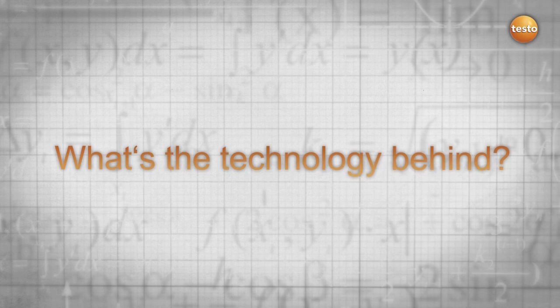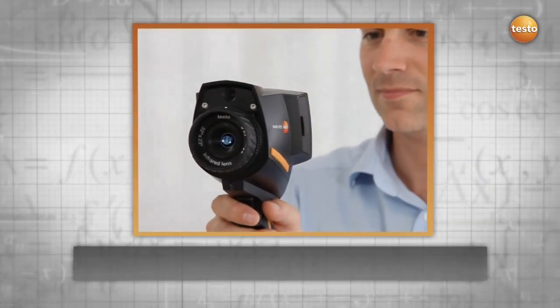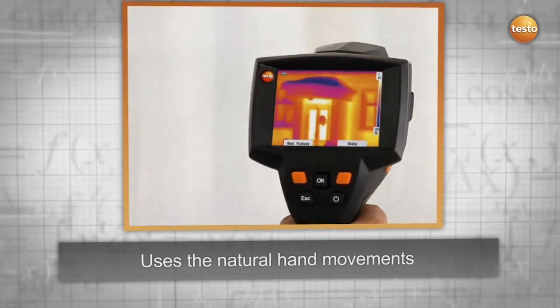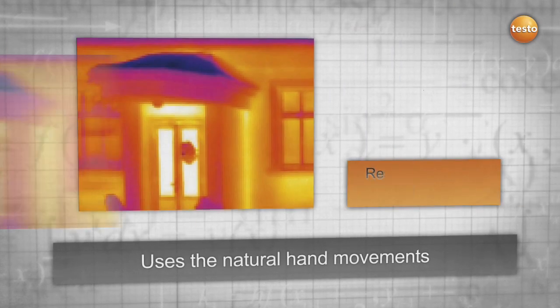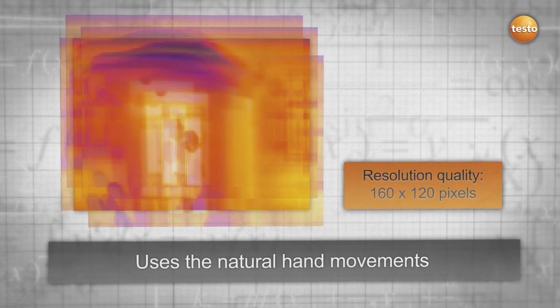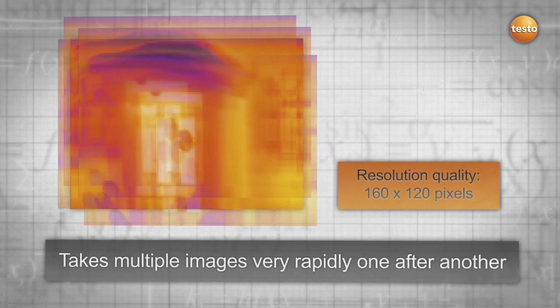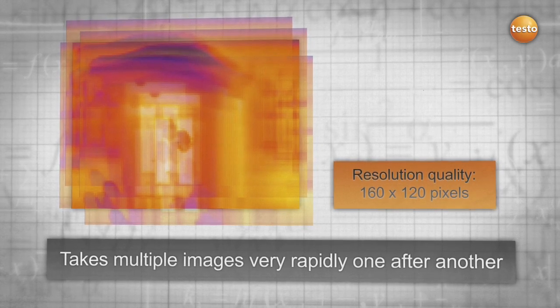The Super Resolution technology uses natural hand movement and takes multiple images rapidly, one after another, which are slightly shifted to each other. Using an algorithm, these images are then calculated to obtain one image.